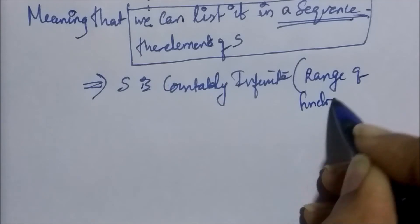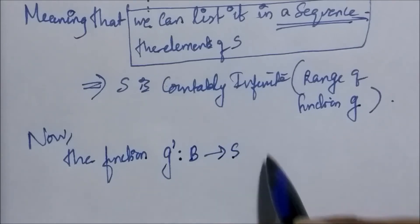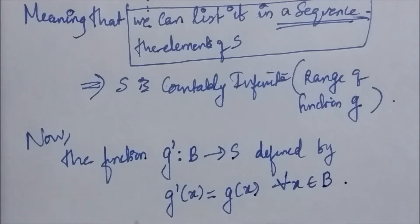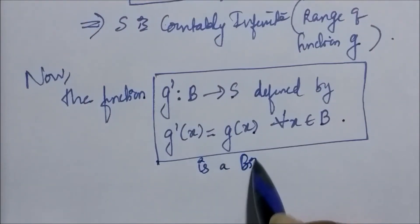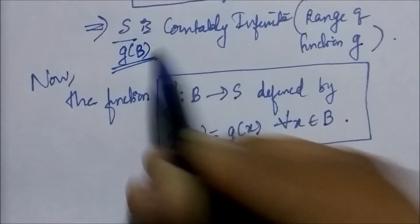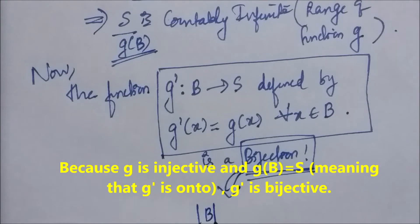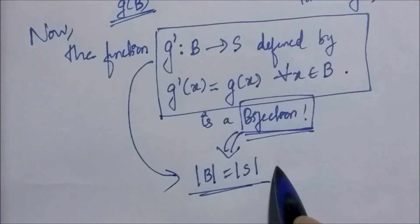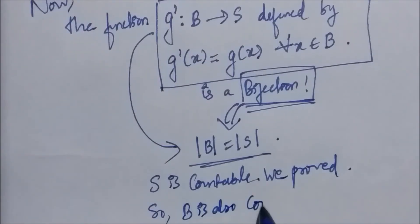S is the range of the function g, so S is countably infinite. Now consider the function g' from set B to set S defined by g'(x) = g(x) for all x belonging to B. Since S is exactly g(B), the function g' is a bijection. Since it's a bijection, the cardinality of B equals the cardinality of S. We already know S is countable, so we get that B is also a countable set.